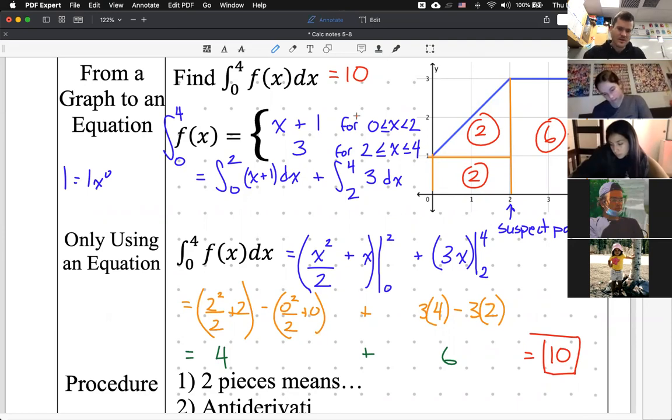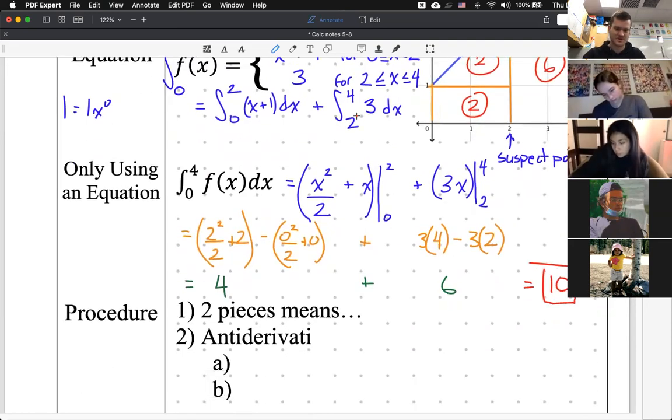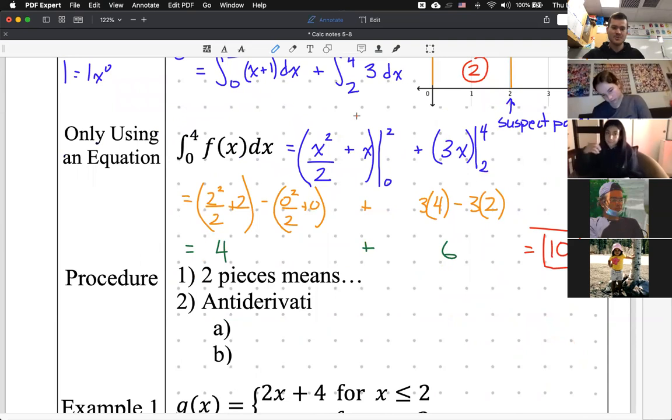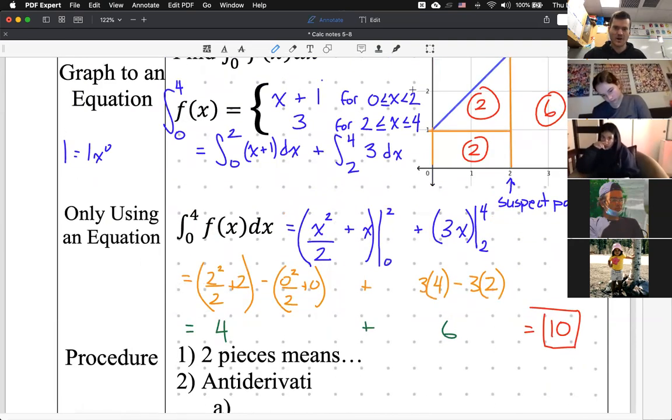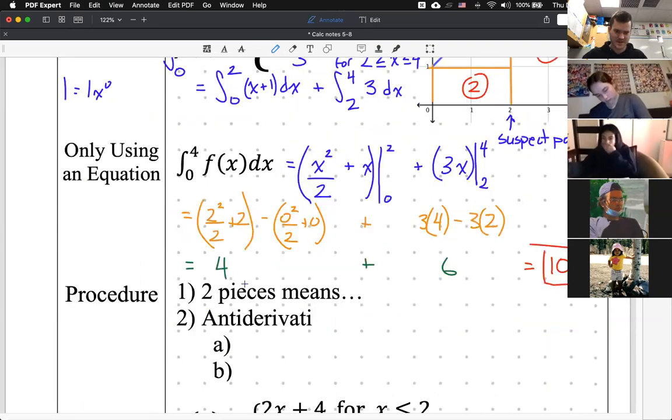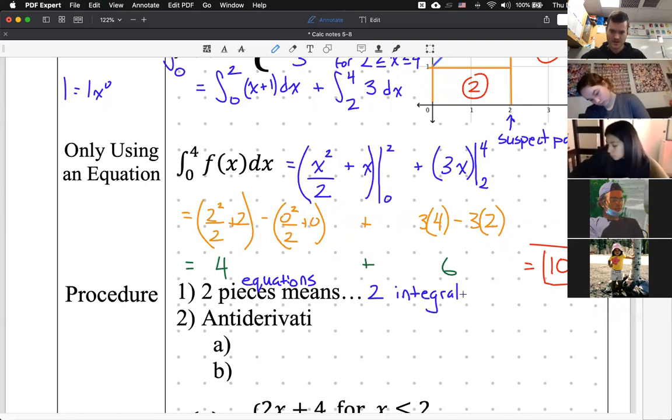Okay. So, let's generalize this procedure every single time. So, if you have two pieces, pieces just meaning how many equations do you have. If you have two pieces, I can't spell equations. If you have two equations or two pieces, that means you have two integrals. So, that means two integrals. And if you had three pieces, you have three integrals. However many pieces is the number of integrals you should have.